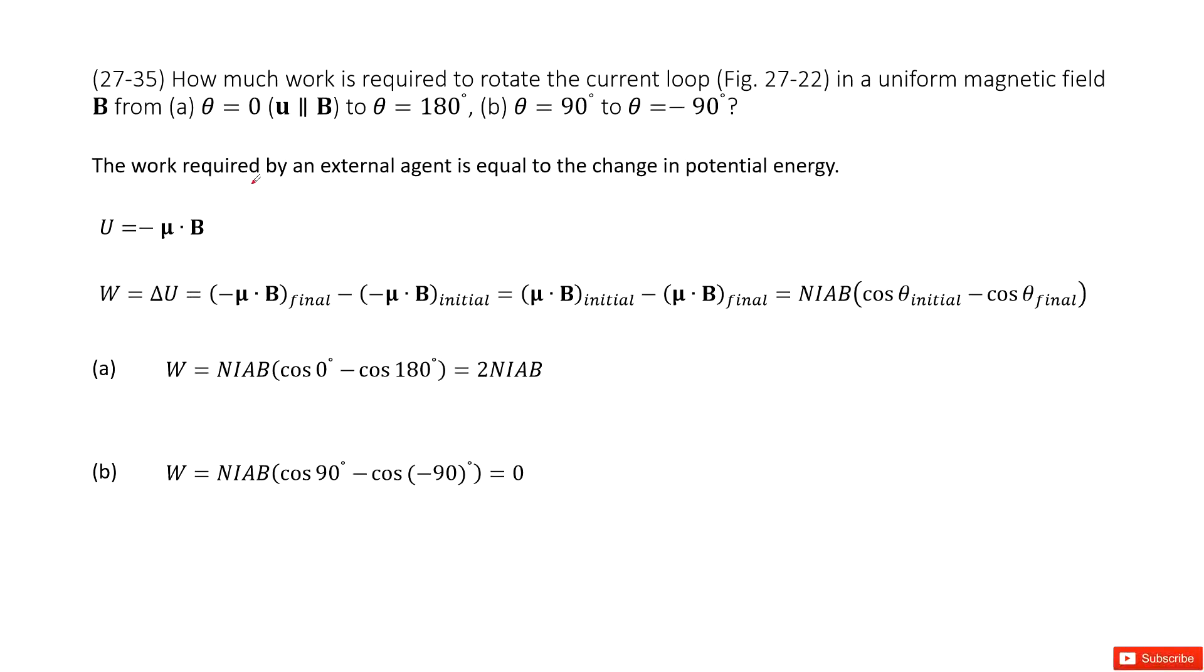Welcome to my channel. I'm Zhang Zingshu. Let's look at problem 35 in chapter 27. Chapter 27 is about magnetism. So we need to find how much work is done to rotate the current loop in a uniform magnetic field.